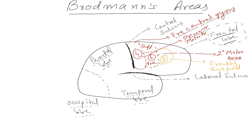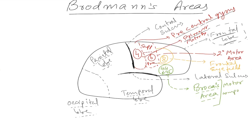In the frontal lobe itself, below these motor areas, there is area number 44 and area number 45, also known as Broca's area. This area is very important for the motor component of speech — that is, the formation of language. The motor component of speech is developed in Broca's area.